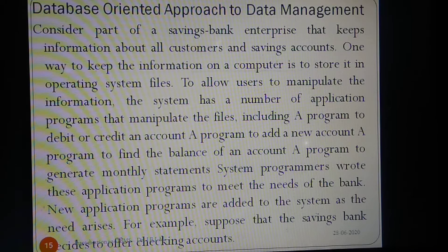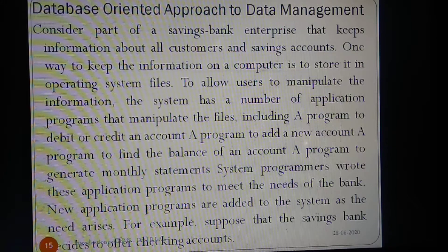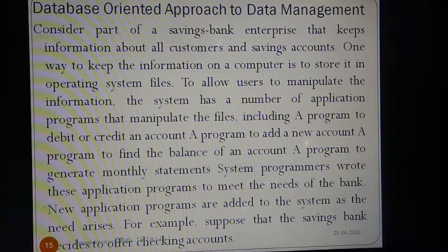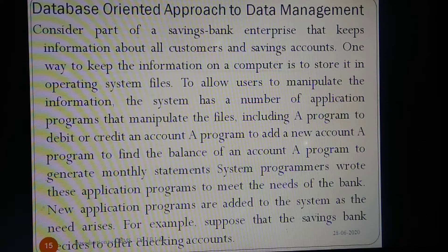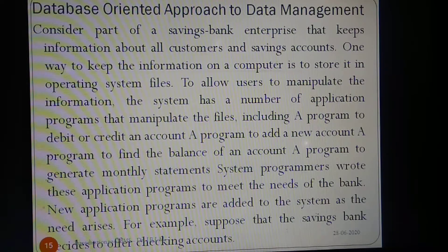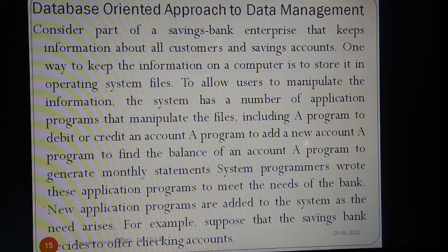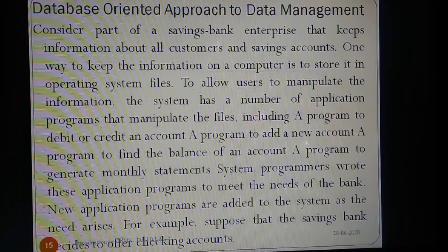File processing system has limitations. Files are separated and have isolated data. Another major disadvantage is redundancy of data — that is, duplication of data, where one data is stored at many places. There was also data dependence, where one data remains dependent on another. Difficulty in representing data from the user's view is another limitation. Further limitations include data inflexibility, incompatible file formats, data security problems, transactional problems, and concurrency problems — meaning only one person can work with one file at a time. These are the limitations of the file-oriented approach and file processing system.